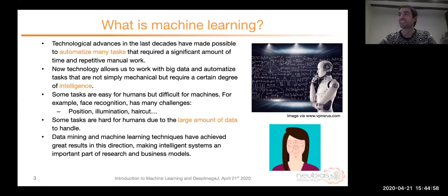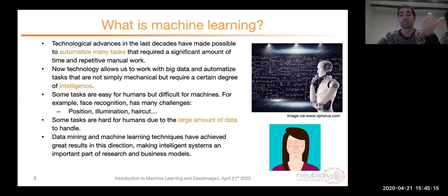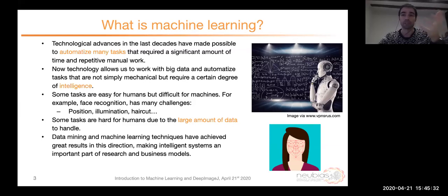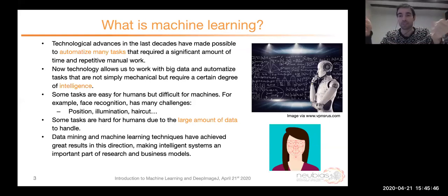Some tasks are actually hard for humans as well, especially those that involve working with huge amounts of data. For example, face recognition is not the same thing when recognizing the people around us compared to recognizing the millions of faces in Google or Facebook databases. What we call data mining, machine learning, and pattern recognition are all techniques that have achieved very good results in this direction, making what we call intelligent systems a very important part of research, but also of business models.